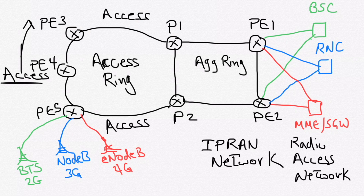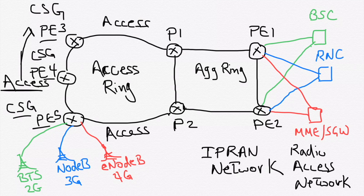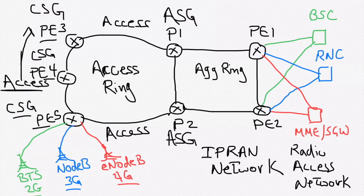Back to the IPRAN network example: PE3, PE4, and PE5 are all called CSG or Cell-Side Gateway — the nodes connected to the access service nodes, providing service connectivity to them. The next level of routers, the P devices, are called ASG (Aggregation-Side Gateway). The next level of nodes, which provides service connectivity to the core radio service nodes, is called RSG — Radio Service Gateway.